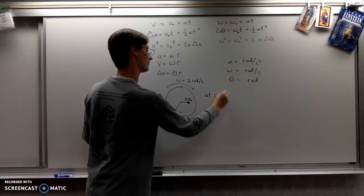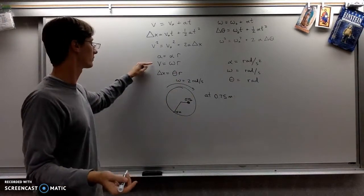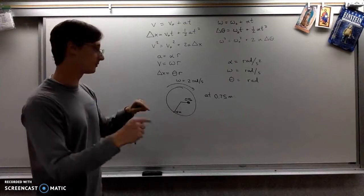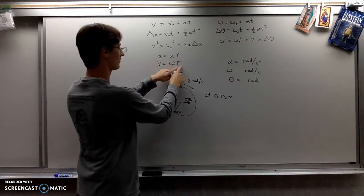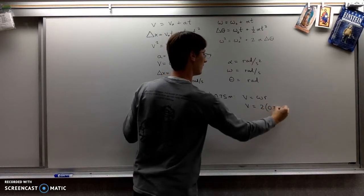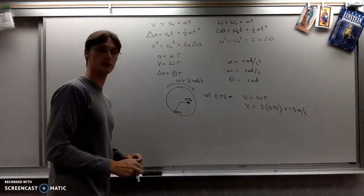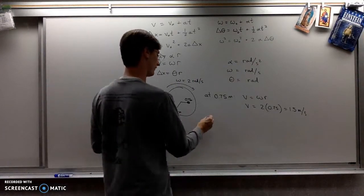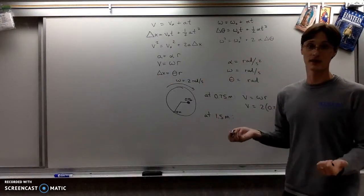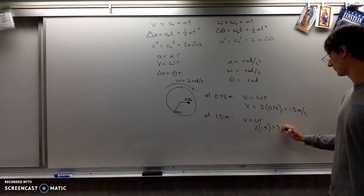The speed - linear speed or tangential speed - would be your 2 radians per second times 0.75 meters. So that means that this kid is whirling around at 1.5 meters per second. The other kid who is twice as far away is going to be moving at a different tangential speed. Same angular velocity because they're on the same merry-go-round, but the linear speeds are going to be different.